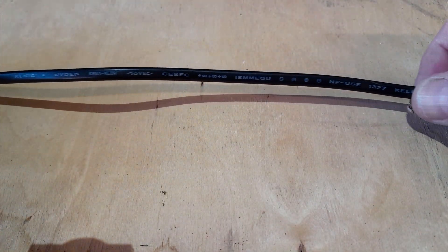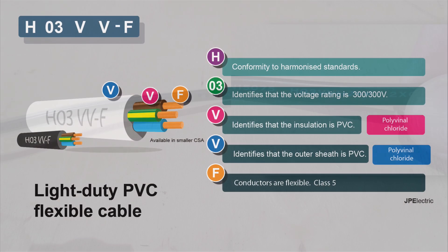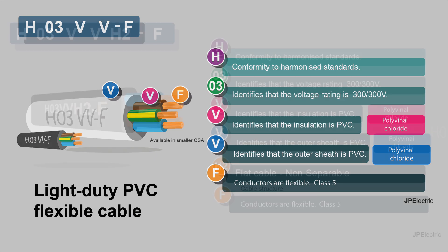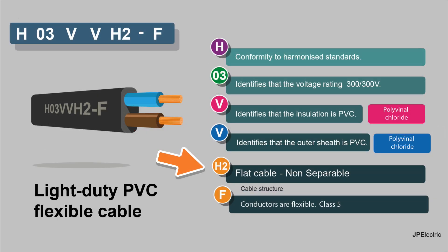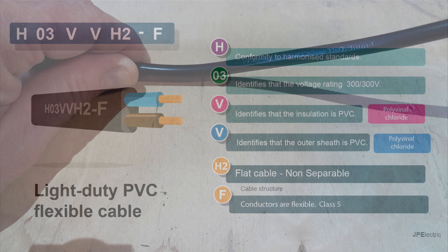Here's another very common flexible cable — this one still has its plug on it. This is H03VV-H2F. This type of cable is very common in domestic electrical appliances and extension leads. H means it conforms to harmonized standards; 03 identifies the voltage rating as 300–300 volts. The V identifies that the insulation is PVC, and the second V identifies that the outer sheath is PVC. H2 means it's a flat cable, non-separable, two-core — live and neutral — so it's used for class 2 type appliances because there's no CPC.